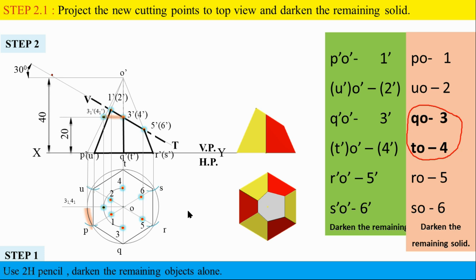Now let's join: 1, 2, 1, 3, 3, 5, 5, 6, 6, 4, 4. Those are the remaining slant edges. The naming: 2 will be U, 1 will be P, 3 will be Q, 5 will be R, 6 will be S, 4 will be T. You will know the outer boundary of the solid and the base. The top view is darkened; you will see the hexagon. The sectional top view is hatched.